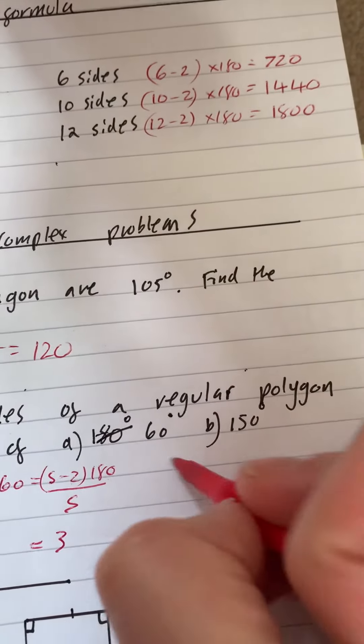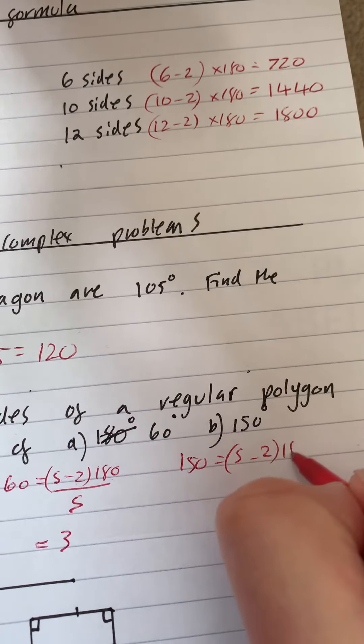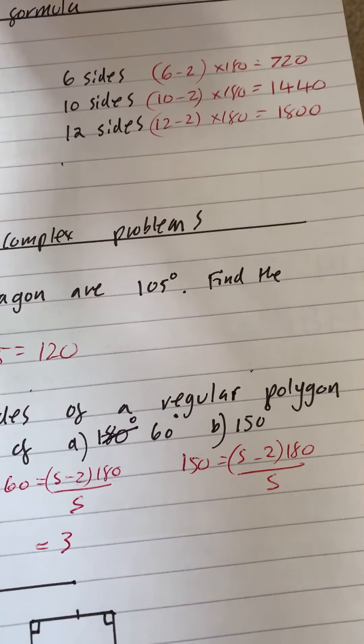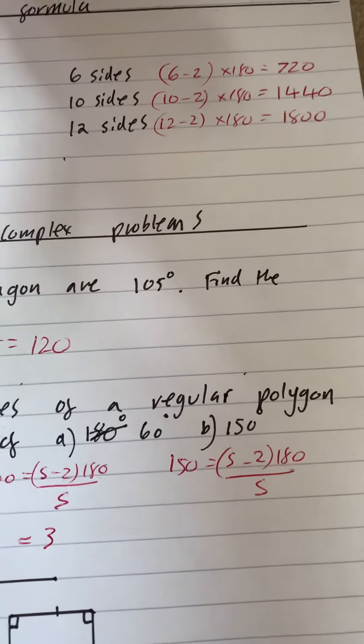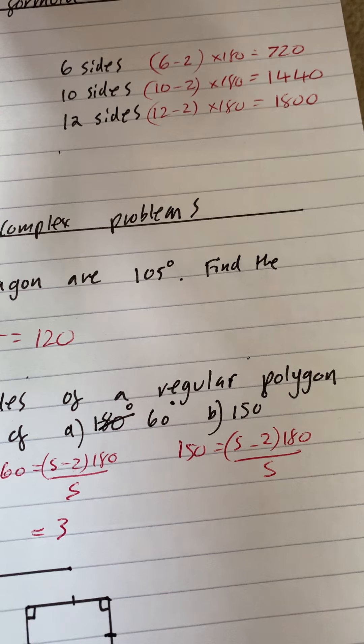Now, we can do the same principle for the next question. We've got 150, S minus two times 180 over S, and if you put in the answer, then it is going to be 12. Let me just check that. So, 10 times 180, divided by 12, gives you 150.